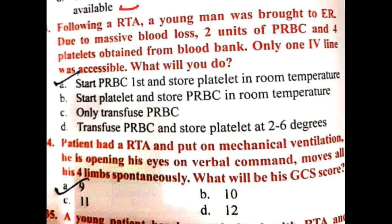Following a road traffic accident, a young man is brought to the emergency department. Due to massive blood loss, 2 units of PRBC and 4 platelets are obtained from the blood bank. Only 1 IV line is available. In this case, you start giving PRBC first and then store the platelets at room temperature.